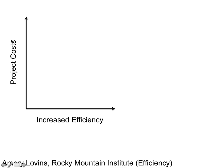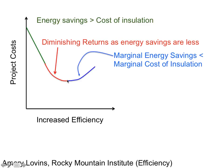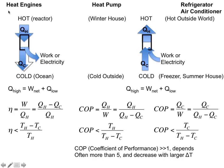If you graph project costs against increased efficiency measures, costs initially decrease because adding insulation to a building is much cheaper in the long run than heating it. However, adding more insulation has diminishing returns — eventually, the extra insulation costs more than the savings from the reduced energy bill. But at some point, you no longer need an air conditioner or heater because your building is so well insulated. Please know the difference between a heat engine and a heat pump and how to make them efficient.